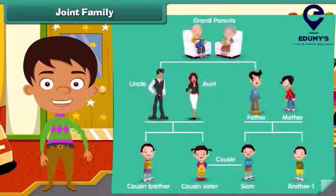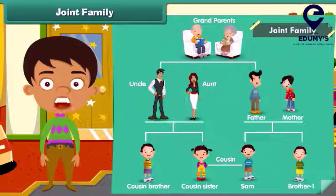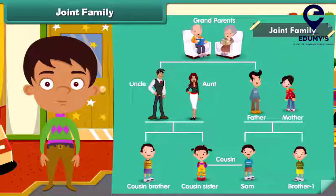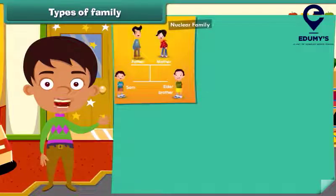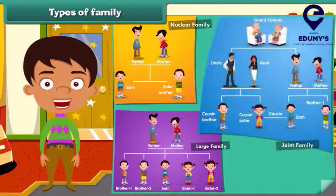Do you know what a joint family is? In a joint family, grandparents, uncles, aunts and cousins all live together with the parents and children of a nuclear family. So now you are able to identify whether it is a nuclear family, a large family or a joint family.